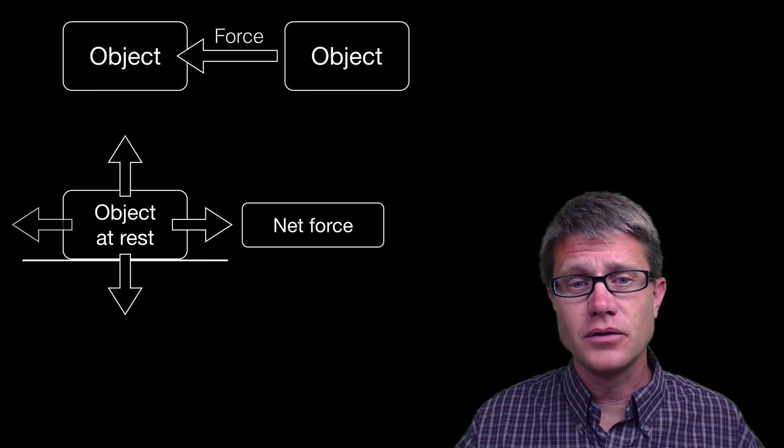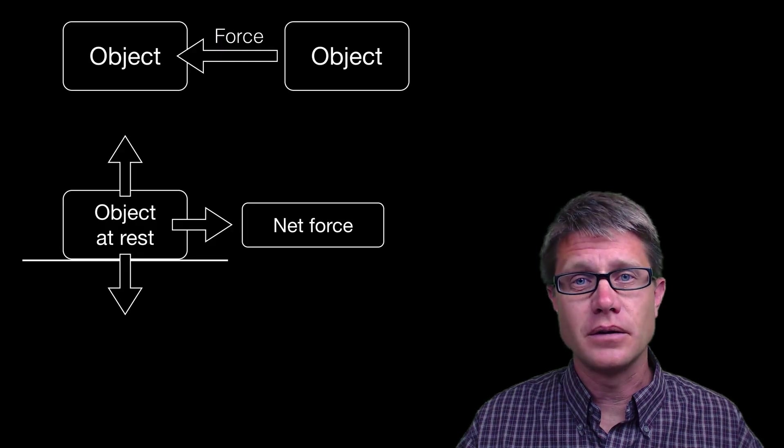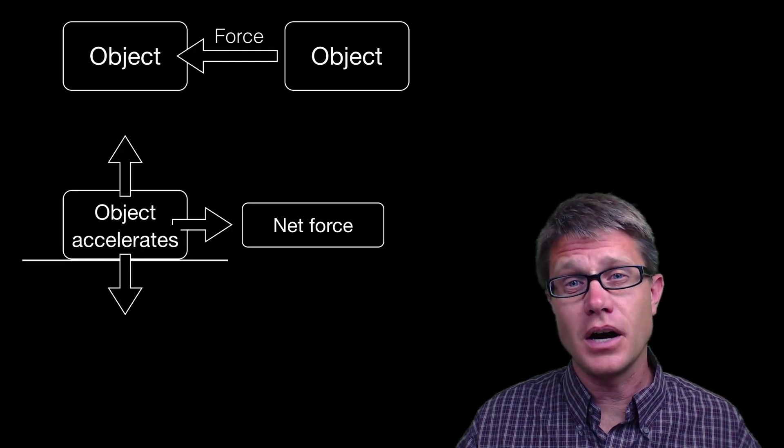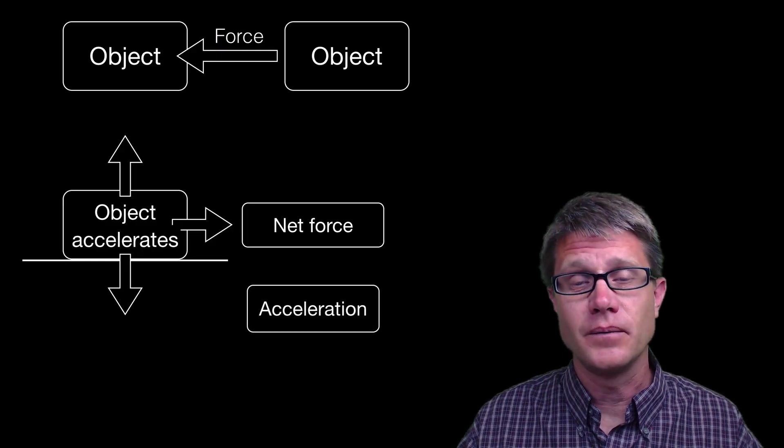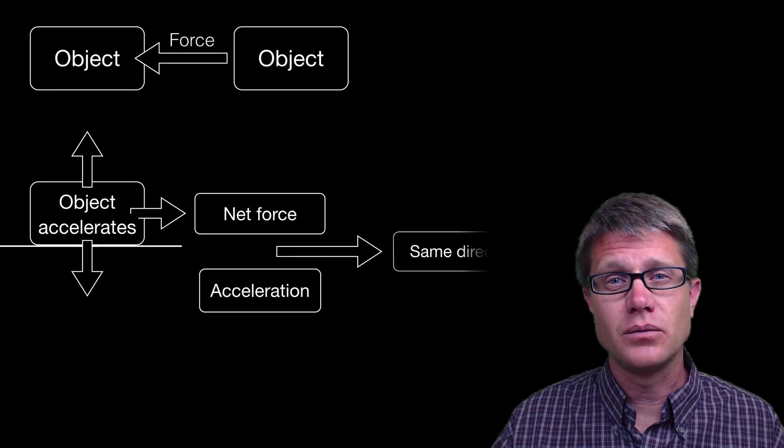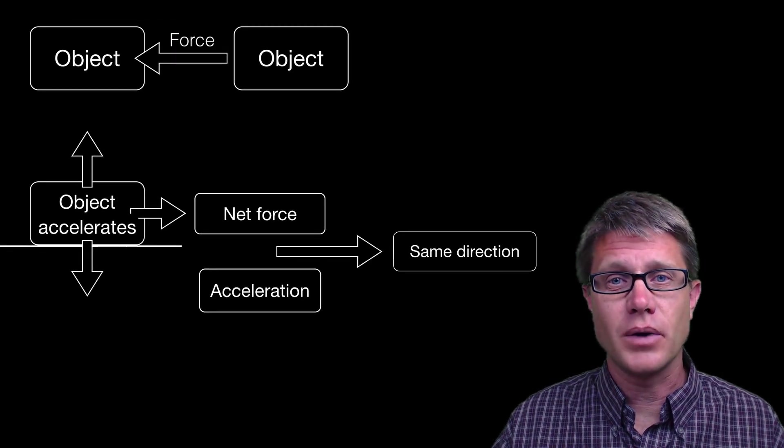But if they are unbalanced, those net forces are in one direction, we know this, that there is going to be an object accelerating in that direction. The net force on an object and the acceleration will always be in the same exact direction.